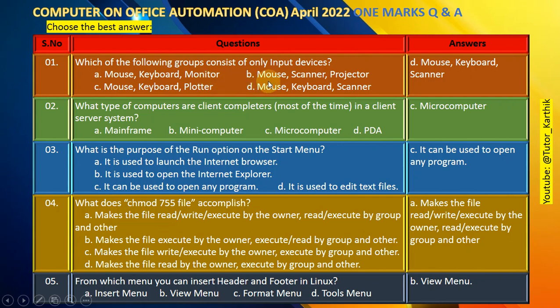Option B: Mouse, scanner, projector — projector is an output device. Option C: Mouse, keyboard, plotter — plotter is an output device. Option D: Mouse, keyboard, scanner. The answer is D — mouse, keyboard, scanner, as all three are input devices.